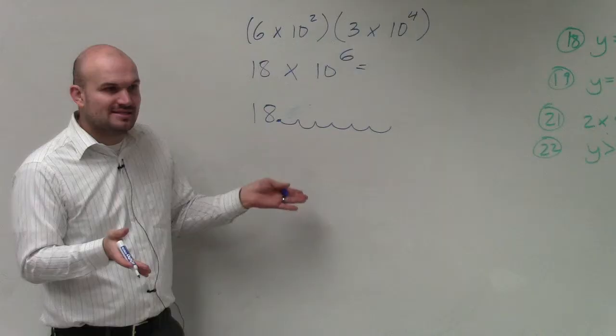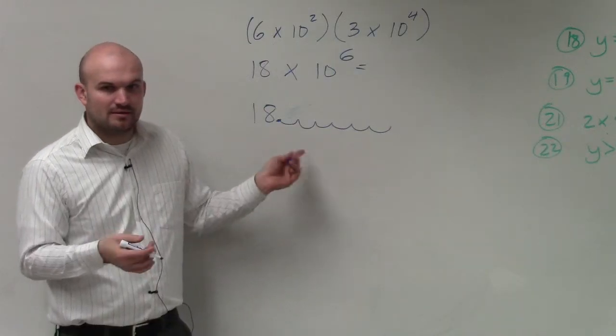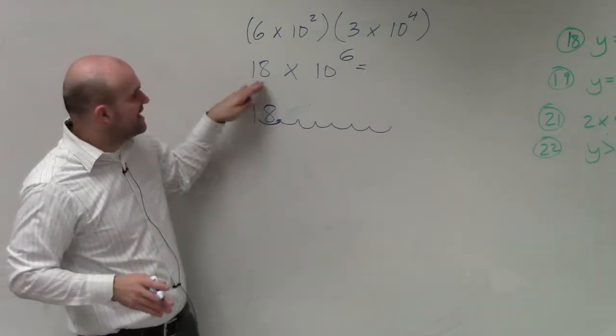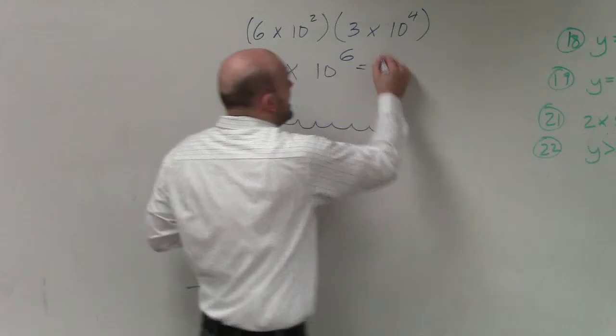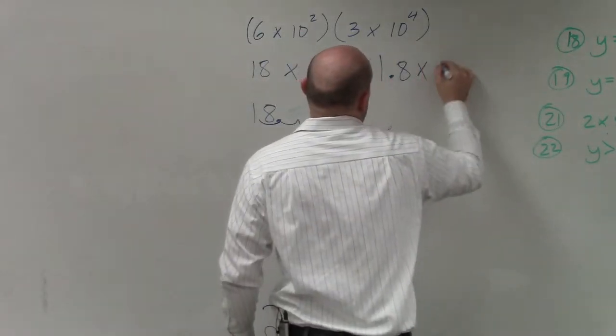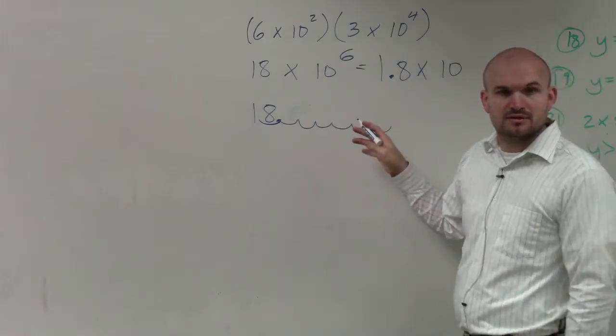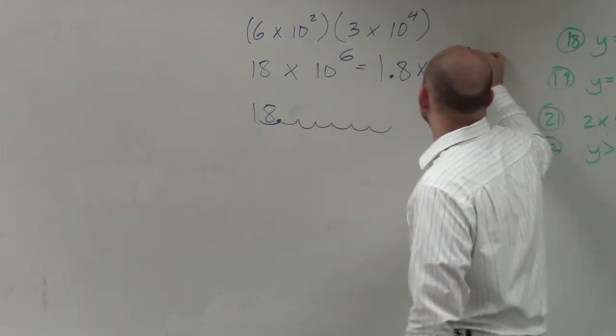But I need the decimal place to be between where? The 1 and the 8, right? So rather than saying this is my final answer, I'm going to want to say 1.8 times 10 to the, now how many spaces do I need to move over? 7.